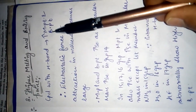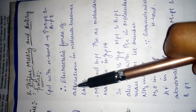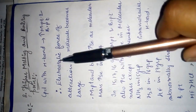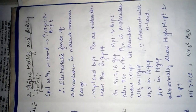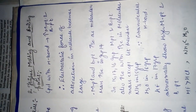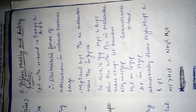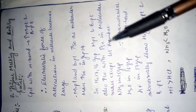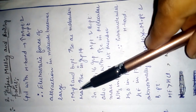The next point is higher melting and boiling point. Compounds with hydrogen bonds have higher melting and boiling points because the electrostatic force of attraction in the molecule becomes large. If the electrostatic force of attraction is large, the hydrogen bond is strong — that is why melting and boiling point is high.